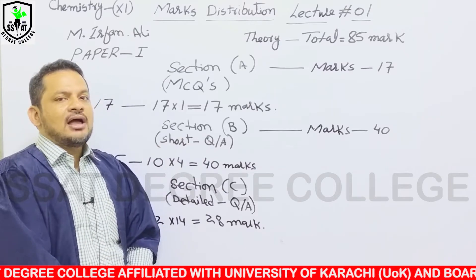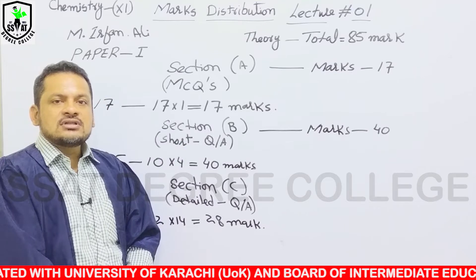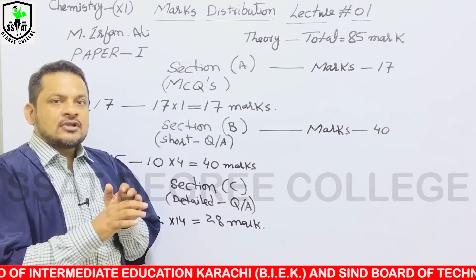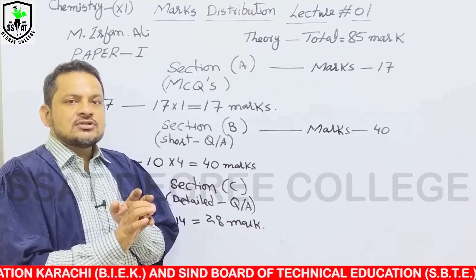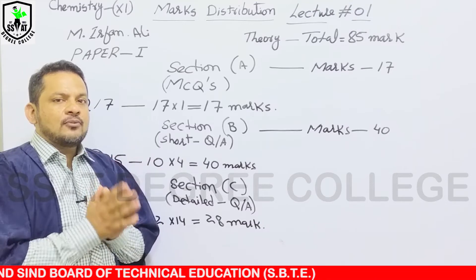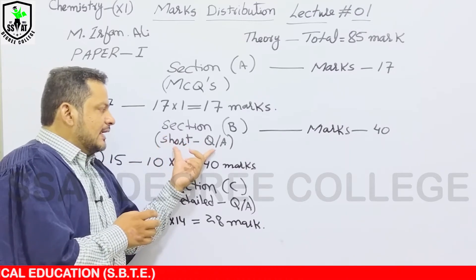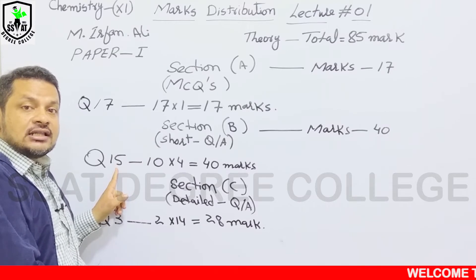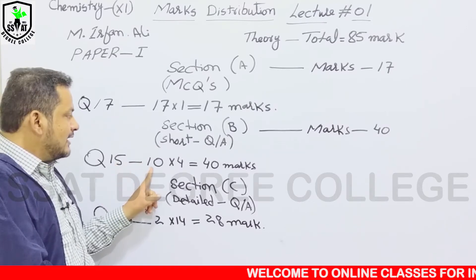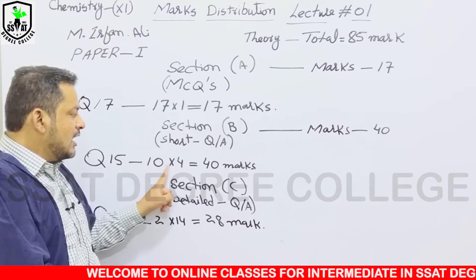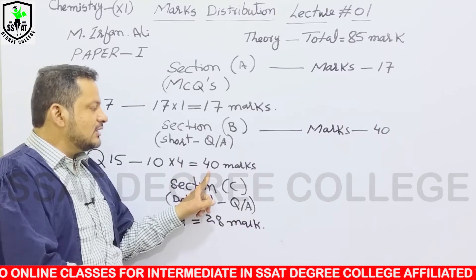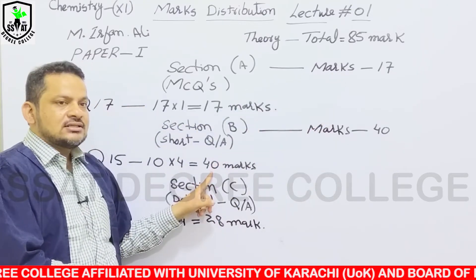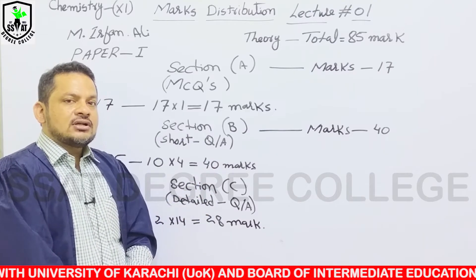Chemistry First Year के हवाले से Section B में जादातर Definitions, Differentiation, Reasoning, और छोटी Derivations या छोटी Theories दी जाती हैं जिनमें Detail नहीं दिखानी होती۔ Total 15 Questions दिये जاते हैं, जिनमें से 10 Questions Attempt करने होते हैं۔ ہر Question 4 Marks کا ہوتا ہے، تو Section B کے Total 40 Marks بن جاتے ہیں۔